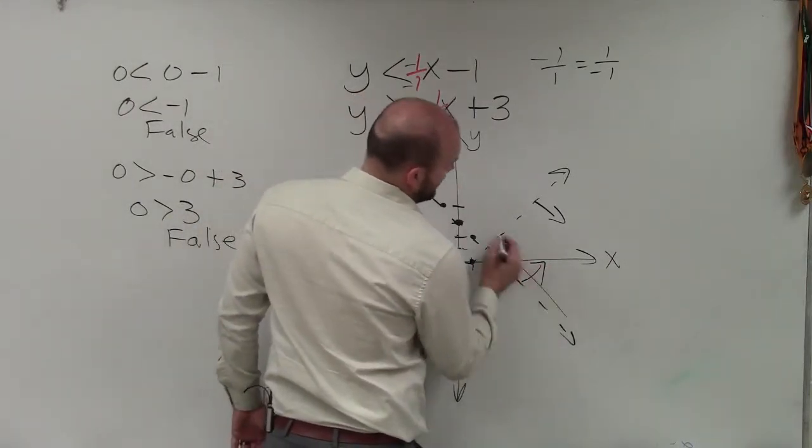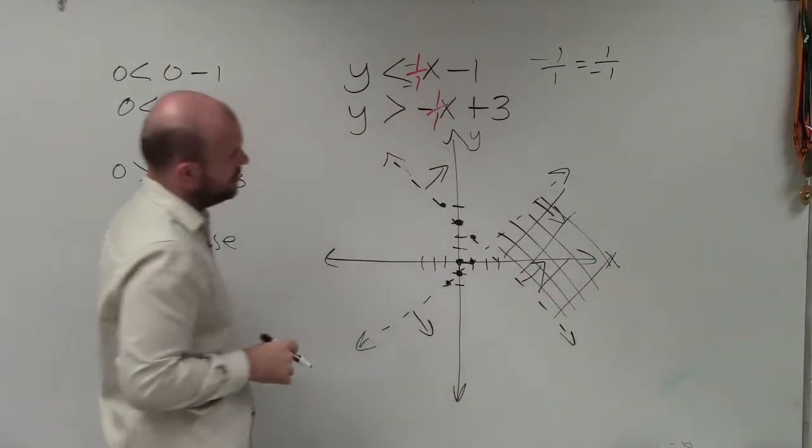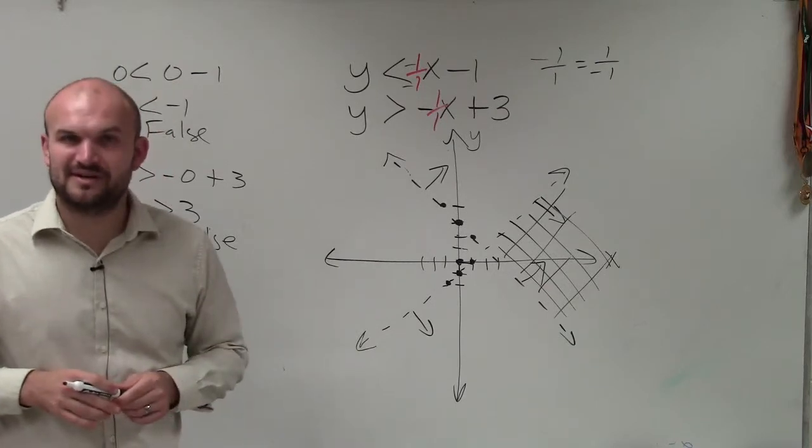Then I'm just going to shade where it's true for both of my inequalities, which will be that region right there. So there you go, ladies and gentlemen. That is how you graph a system of linear inequalities. Thanks.